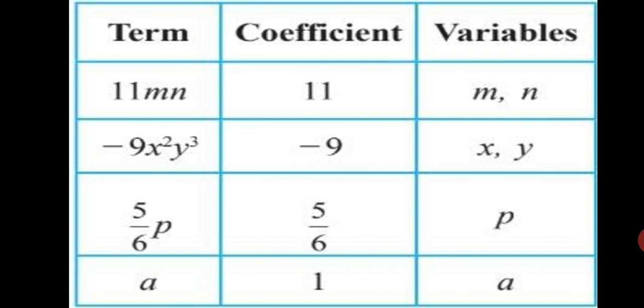So, now that you know what is a term, let's have a look at some examples. 11mn. Here, the coefficient is 11 and variables are m and n.